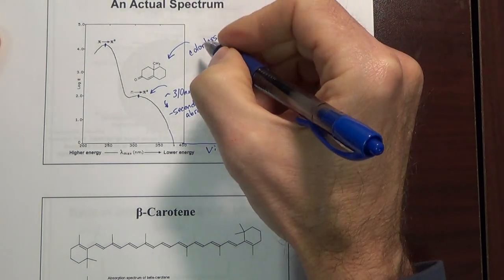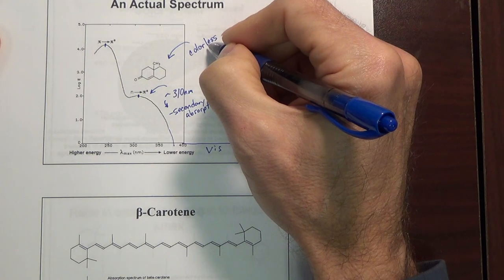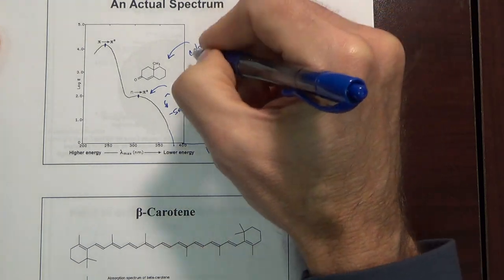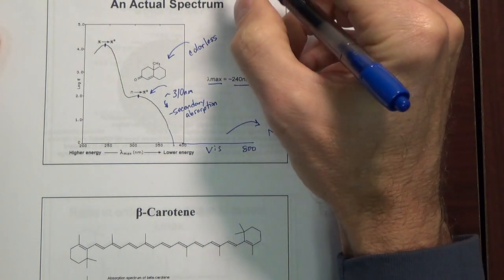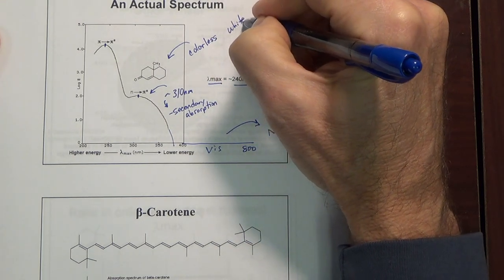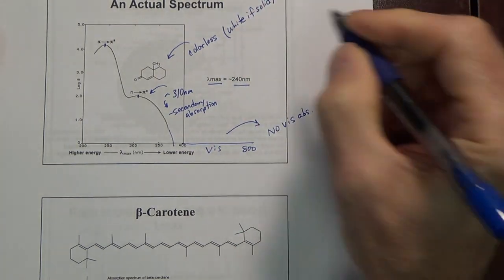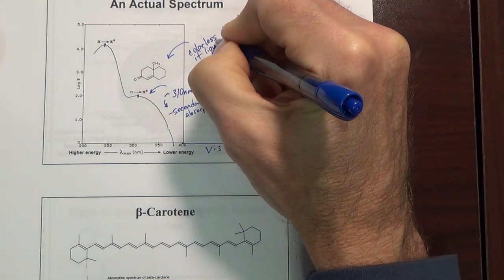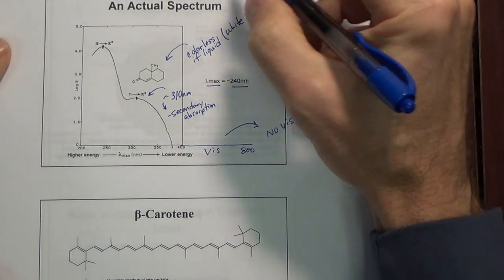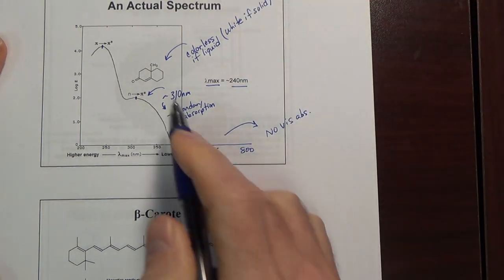If it's a liquid, it's going to be colorless like water or ethanol solvent. If it's a solid, solids are difficult to be truly colorless because of their crystalline nature, and it would appear white if solid, because a solid is usually going to be reflective due to its crystalline nature. But it wouldn't be any color.